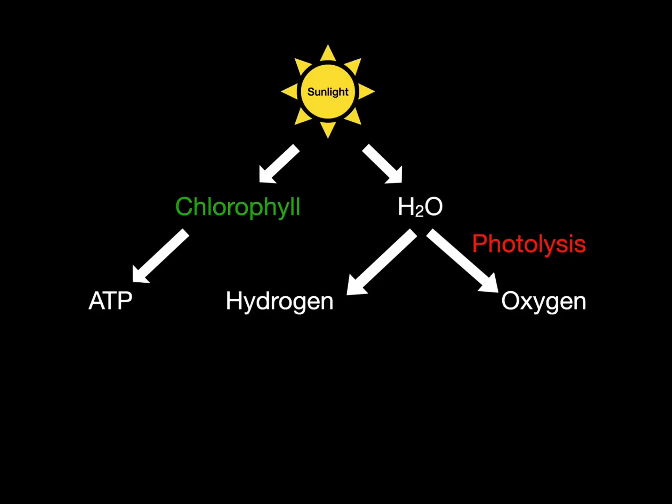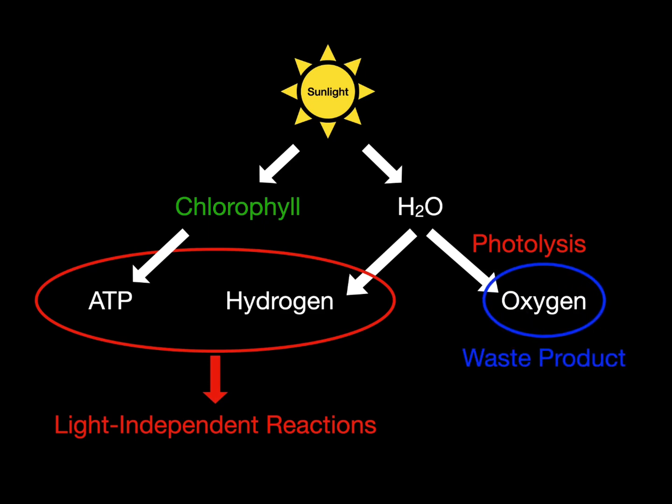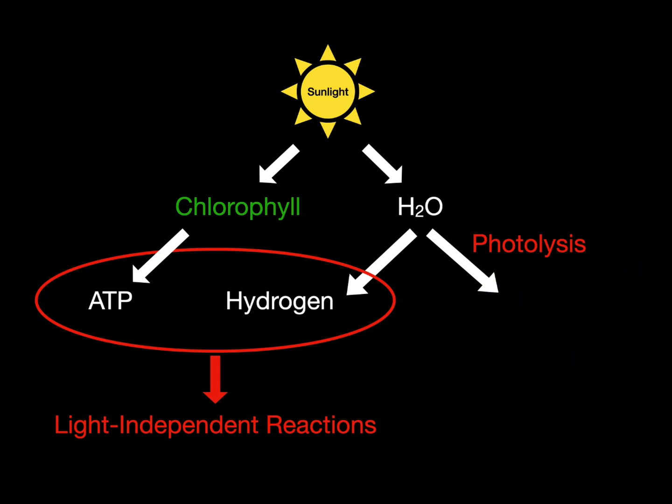The ATP and hydrogen go on to be used in the light-independent reactions of photosynthesis, while the oxygen is a waste product.